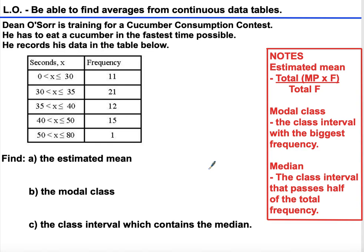For the estimated mean, we need to add another column for total midpoint times frequency. For each individual class interval, we're going to go through this procedure. The first midpoint, as I said, is 15, and we're doing 15 times 11.